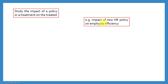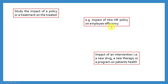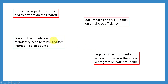Similarly, from the perspective of HR research, if you want to study the impact of a new HR policy on employee efficiency, or the impact of interventions — this technique is mostly used in medical science. You can study the impact of a new drug, therapy, vaccine, or any program introduced in a hospital on patients. You can also study something like a mandatory seatbelt law that might reduce car accidents.